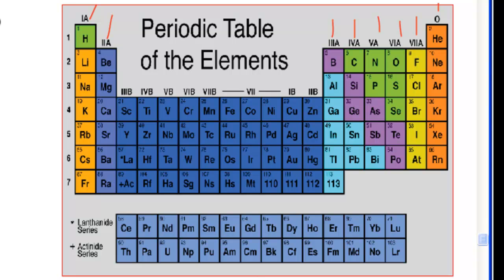Each of the elements has three valence electrons in group three. Group four has four valence electrons. Group five has five valence electrons. Group six has six valence electrons. Group seven has seven valence electrons, and group eight has, of course, eight valence electrons.